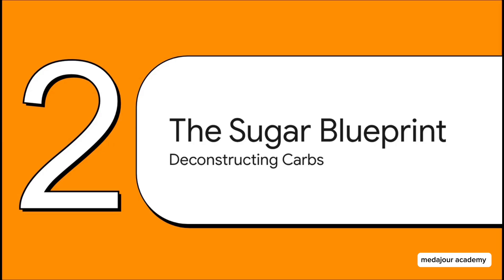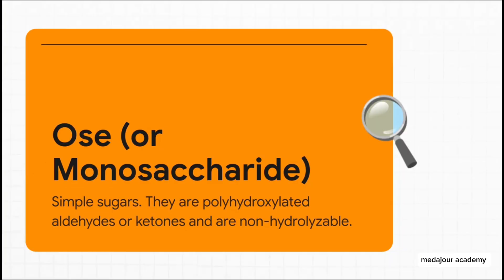Let's deconstruct the basic unit of a carbohydrate — a single simple sugar — and see exactly what it's made of. The basic unit of a sugar is called a monosaccharide. Its official, super-sciencey definition is a polyhydroxylated aldehyde or ketone. That sounds like a total mouthful, but stick with me, because it's really just a fancy way of describing a surprisingly simple recipe.